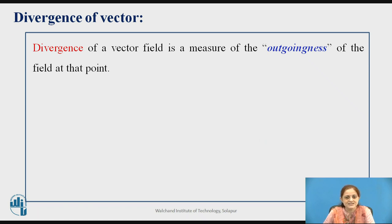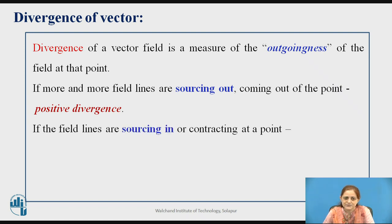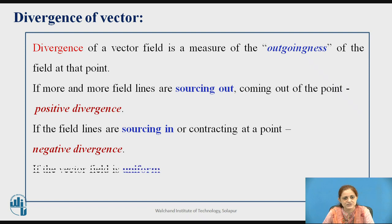The divergence of a vector field is a measure of the outgoingness of the field at a given point. If more field lines are sourcing out from a considered point, that is positive divergence. When the field is contracting at a point, meaning it is incoming at that point, that is considered negative divergence. When the vector field is uniform, that is, outgoingness equals incoming, the divergence is zero.